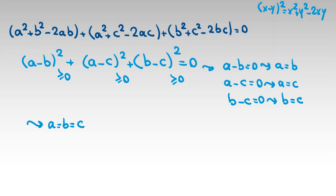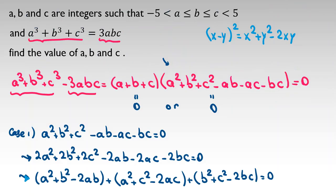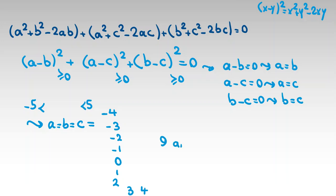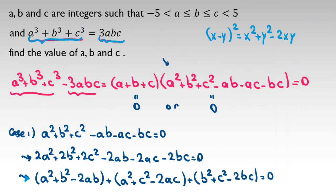Combining all of them, a equals b equals c. We can verify this satisfies the equation since both sides become 3a cubed. Given the constraint negative 5 less than a less than 5, a can be negative 4, negative 3, negative 2, negative 1, 0, 1, 2, 3, or 4 — giving us 9 answers in Case 1.